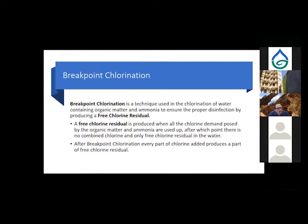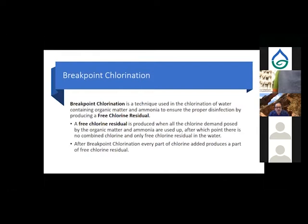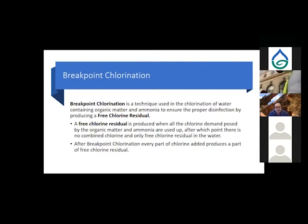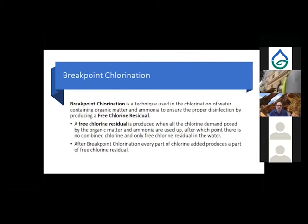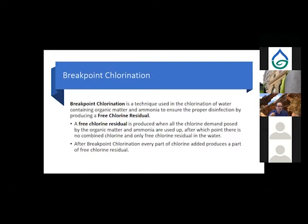We use a procedure called breakpoint chlorination — a technique used to chlorinate water containing organic matter and ammonia to ensure proper disinfection by creating a free chlorine residual that we can track through the system. A free chlorine residual is produced when all chlorine demand posed by organic matter and ammonia is used up, after which only free chlorine exists. You know you're at breakpoint when for every part of chlorine you add, you see an immediate increase of one part residual.